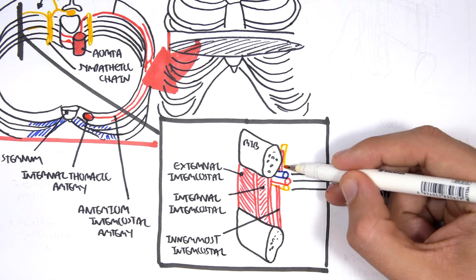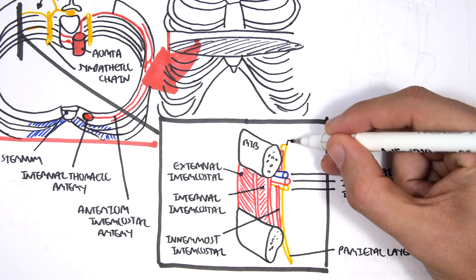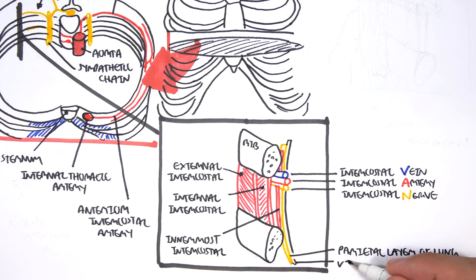So another layer which is under the innermost intercostal is the parietal layer of the lung. And then the other layer is the visceral layer of the lung. In between the parietal layer and the visceral layer, we have the pleural cavity essentially.